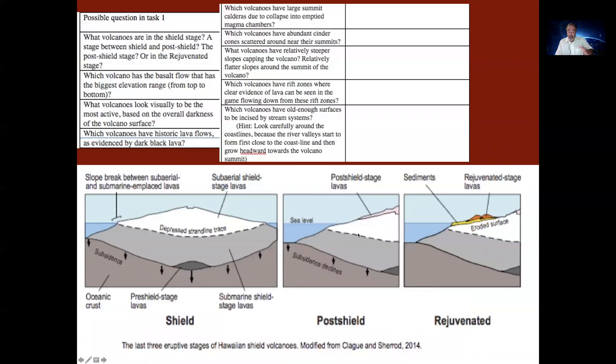So the shield volcano is where you begin to get massive outpourings of lava, like Mauna Kea and Kilauea. The post-shield stage is where the lava is not so massively outpouring, but you get cinder cones and some thicker lavas that will cap the top of the volcano. And the rejuvenated stage is where the volcano has sunk down into the ocean because the ocean crust is sinking under the weight of the volcano, and you get some last-stage sediments.